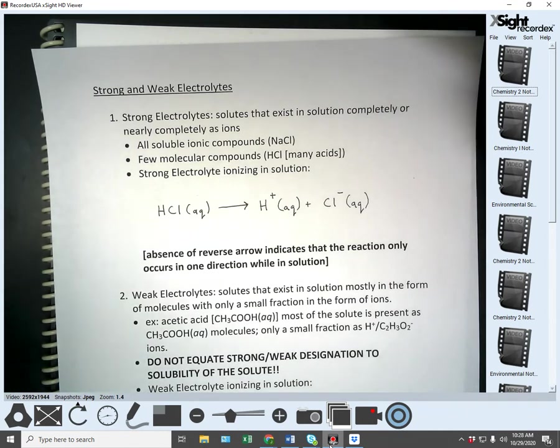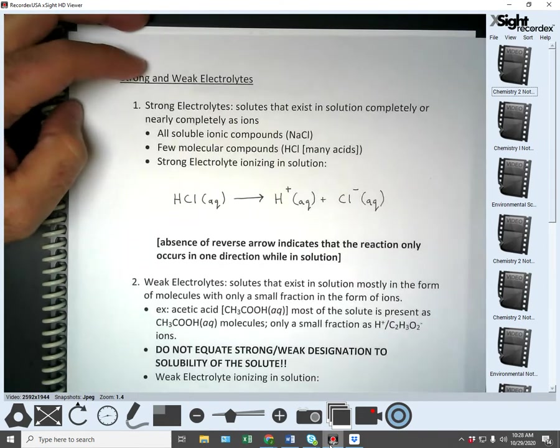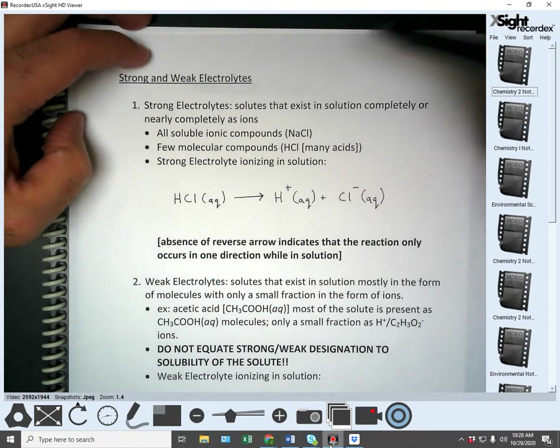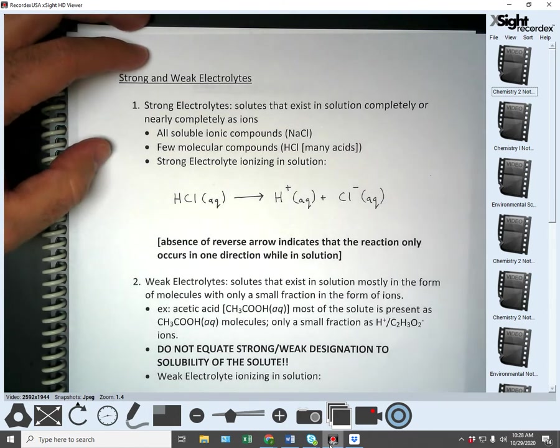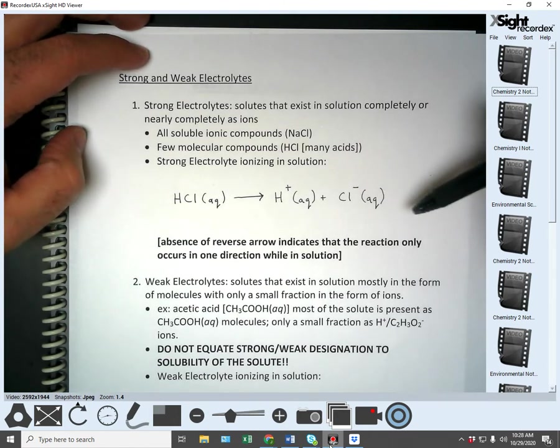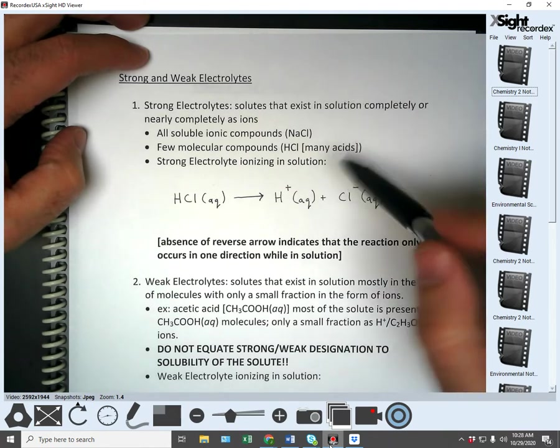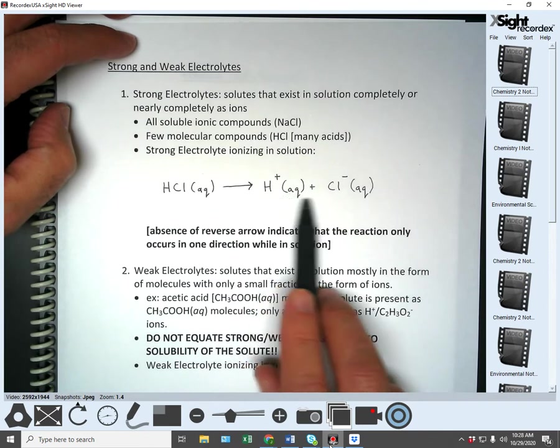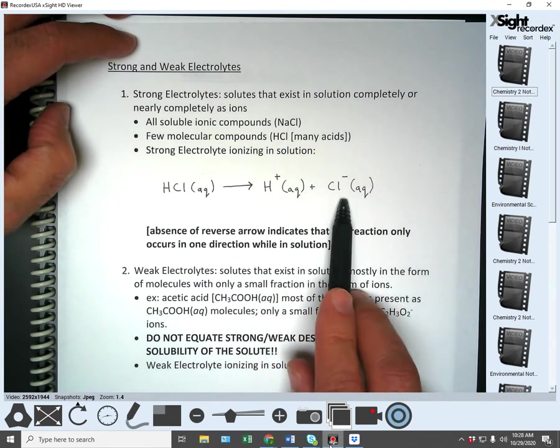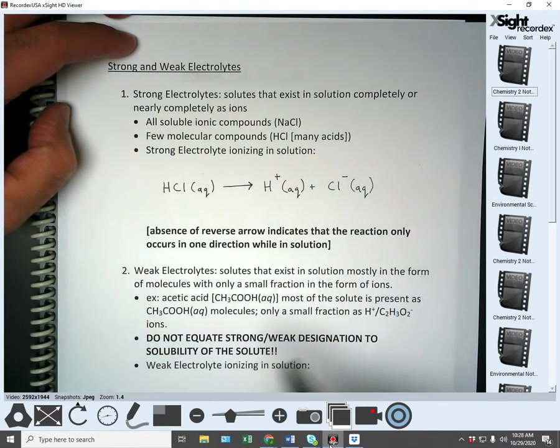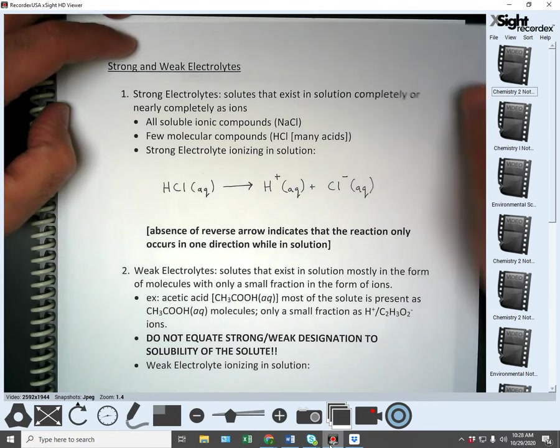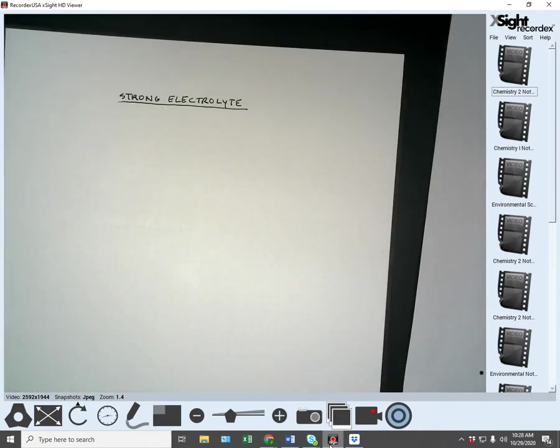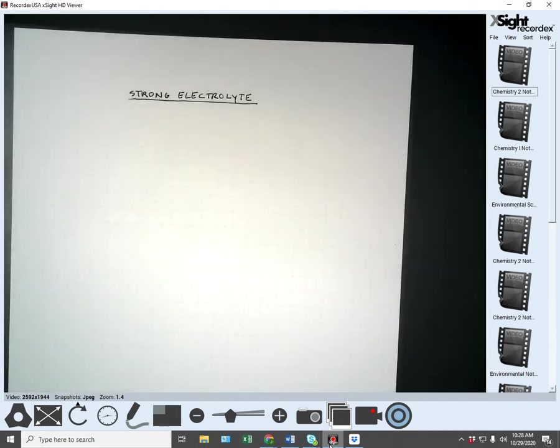We were talking about breaking the electrolytes into different categories of strong and weak. I had gone through the information on strong electrolytes and how the hydrochloric acid ionizes in solution, turning into the ions. So I was going to do some diagramming here.